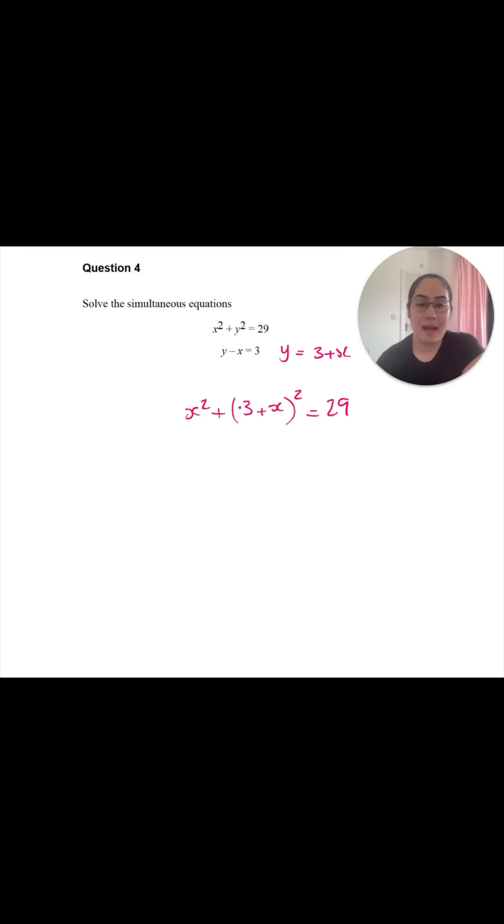So first I need to expand 3 plus x. We're going to do the double brackets and we're going to expand them out. So 3 times 3 is 9 plus 3x plus 3x plus x squared.